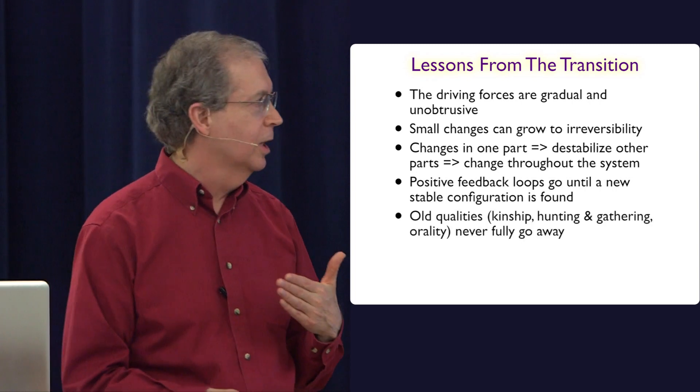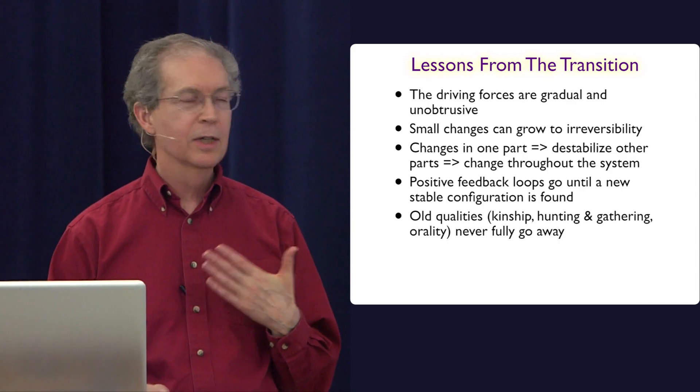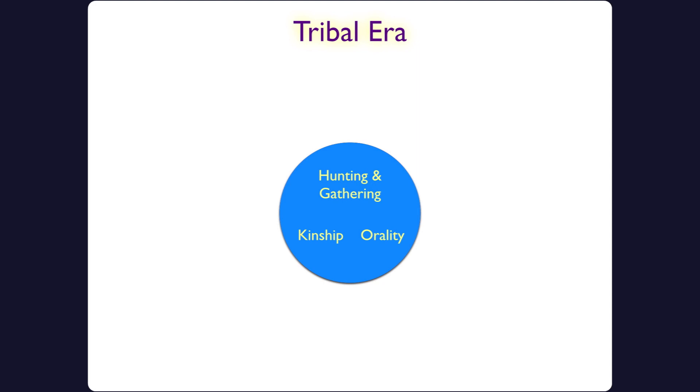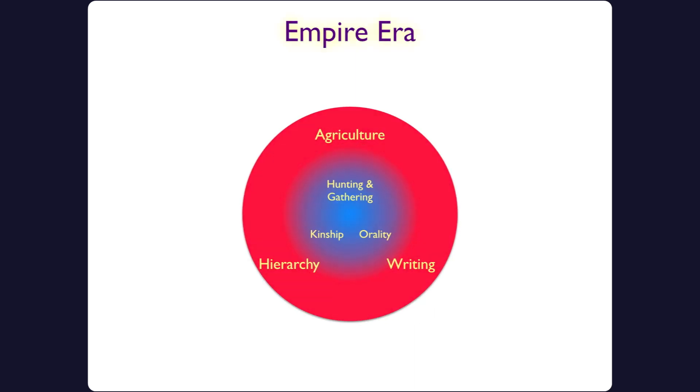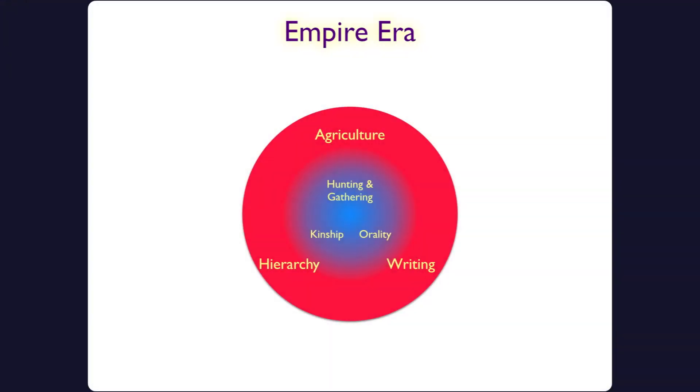However, kinship and hunting and gathering and orality never fully go away. And I want to illustrate that this way. So there you have the tribal era with hunting, gathering, kinship, and orality. And as the transition to the empire era happens, it looks like this. Something called kinship is still there, but it's no longer the defining thing. In the tribal era, as best as we can tell, kinship was applied to other species. It was applied to understanding Grandmother Earth and Grandfather Sky. It was applied in many, many different ways. When you move into the empire era, its territory gets narrowed. You now have this other thing called class, besides just kinship. And the same is true with orality and with hunting and gathering.